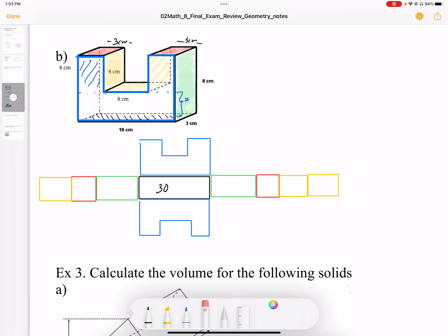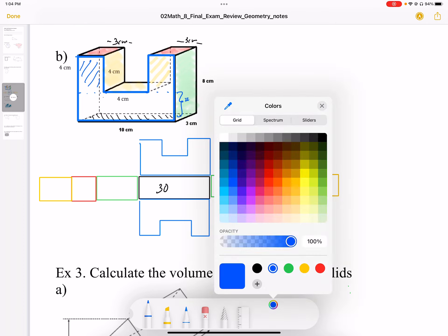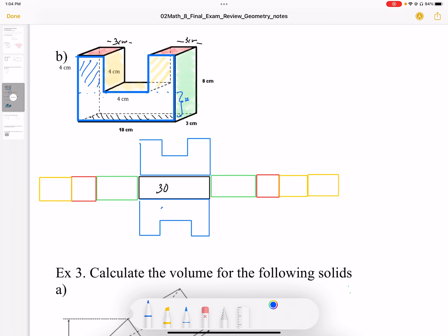So that surface here is going to be 64 centimeters squared. This is going to be 64 as well.